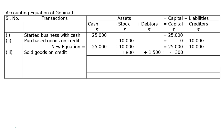The new equation after the third transaction is: cash rupees 25,000 plus stock rupees 8,200 plus debtors rupees 1,500 equals capital rupees 24,700 plus creditors rupees 10,000.